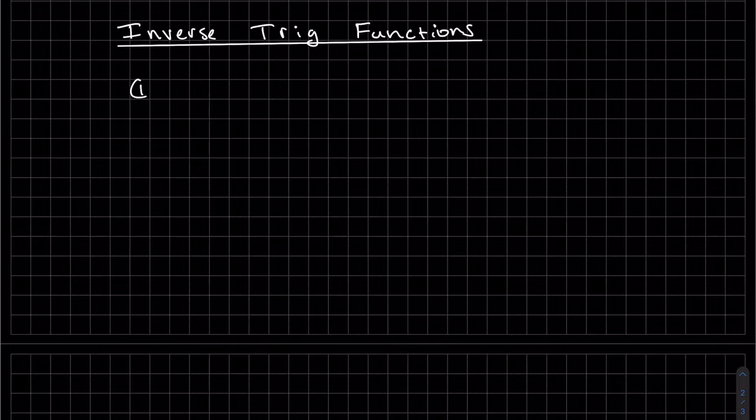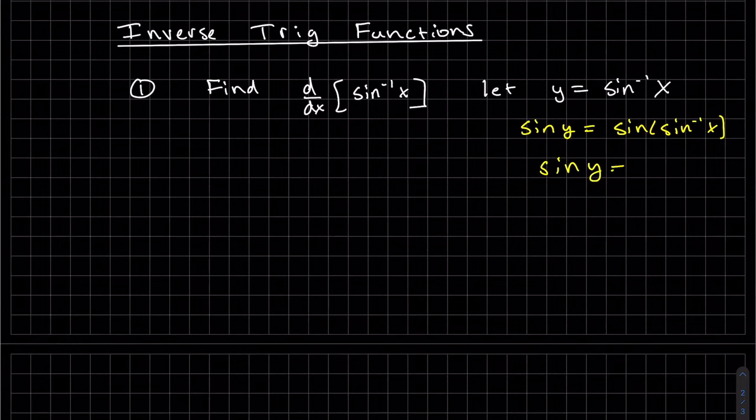We're going to do the same process with finding the inverse of all the trig functions. We're going to start off with sine of x. So we're going to let y equal to the sine inverse of x. So that is the inverse. We don't need to find the inverse. But we don't know what that derivative of the inverse is. So we're going to rewrite this without that inverse symbol. So take sine of both sides. This is equivalent.